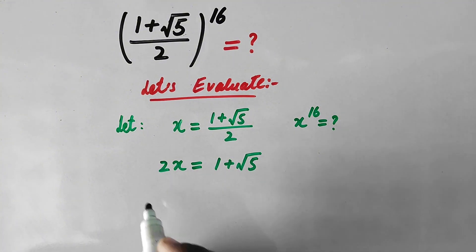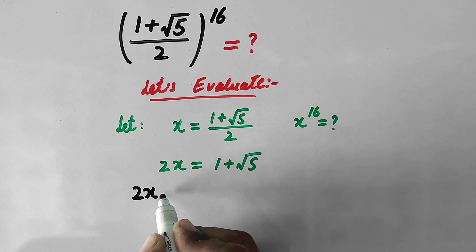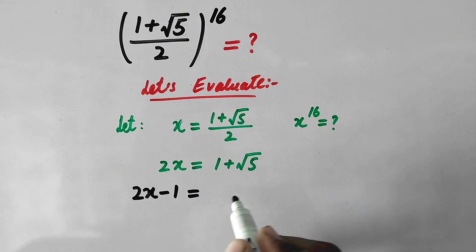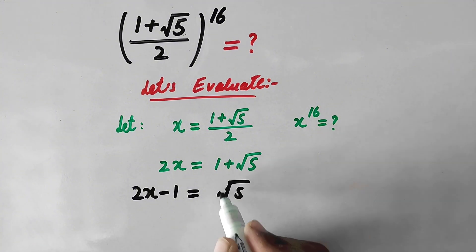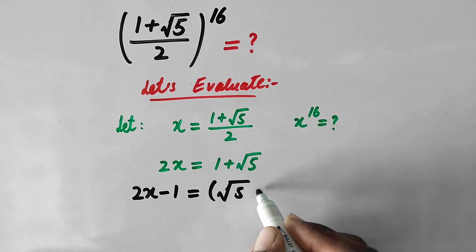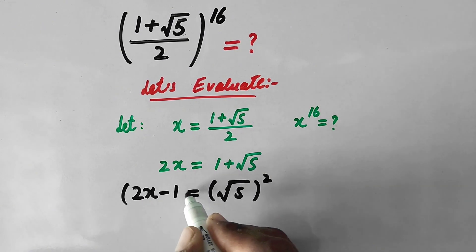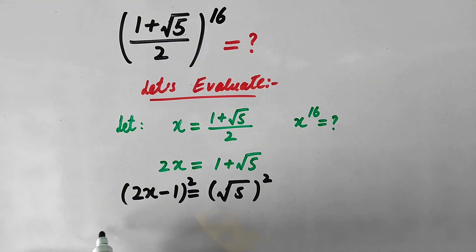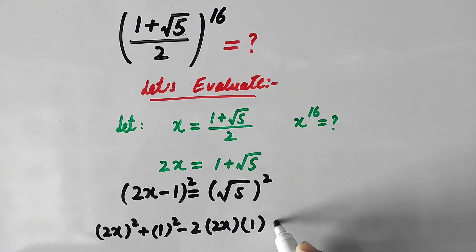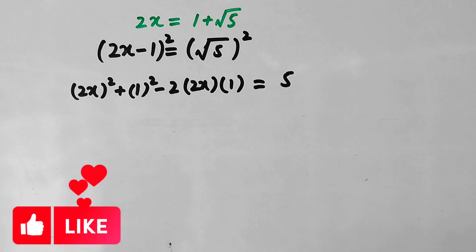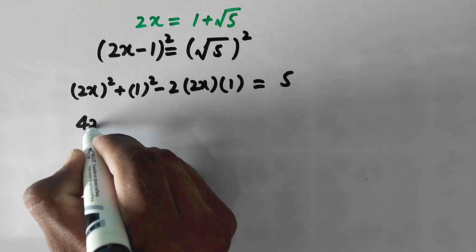Now taking this 1 also to the left hand side, we get 2x minus 1 equal to square root of 5. To eliminate this square root, we take the square on both sides, so we get (2x minus 1) squared equal to 5, which gives 4x squared plus 1 minus 4x equal to 5.